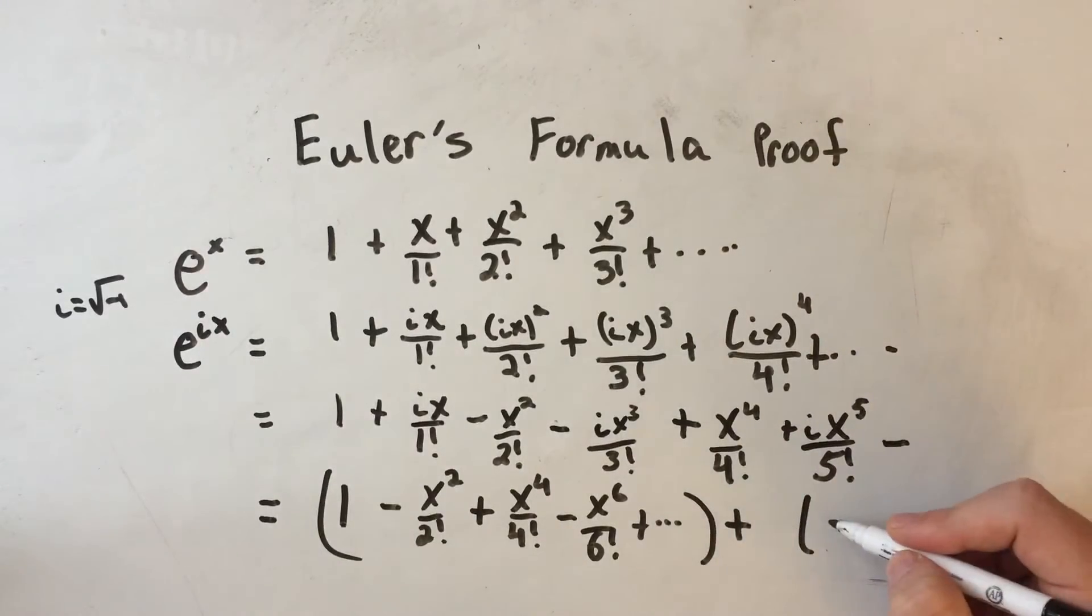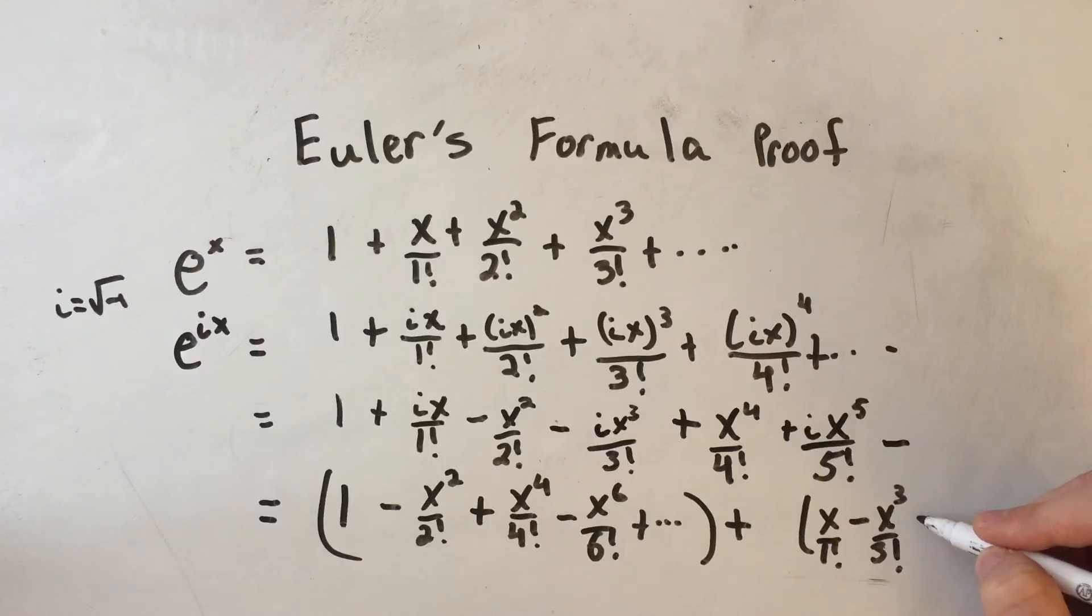So the first one with an i is just x over 1 factorial, the next was minus x cubed over 3 factorial, then it was plus x to the 5th over 5 factorial, and those all had an i, so I'm just going to factor that i out front.